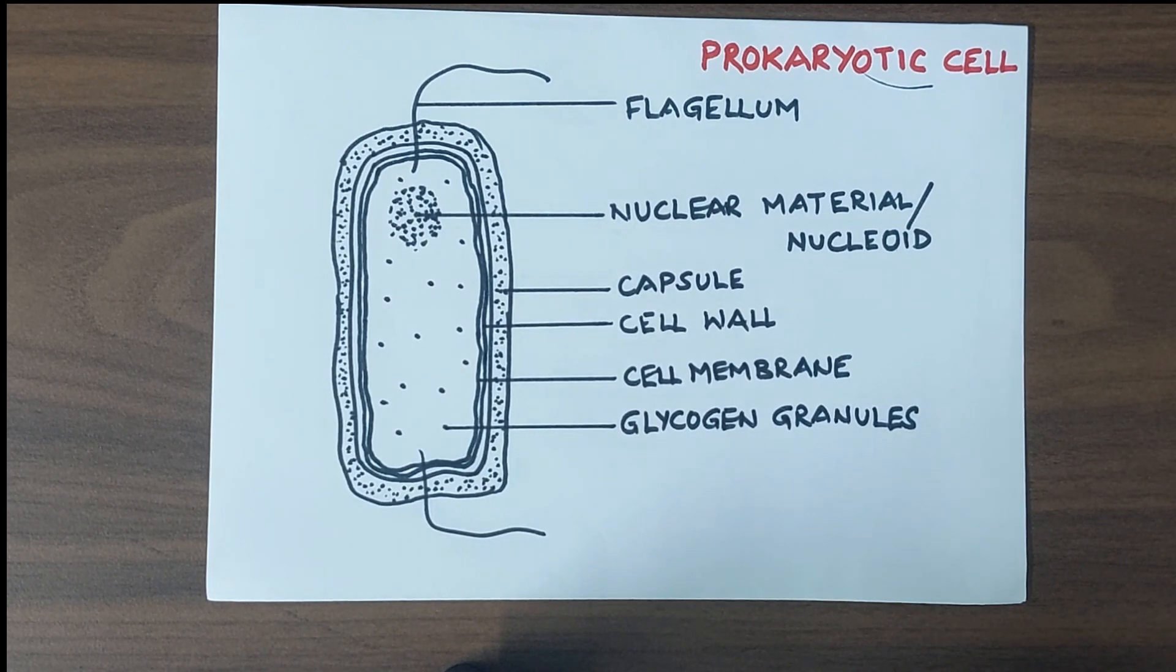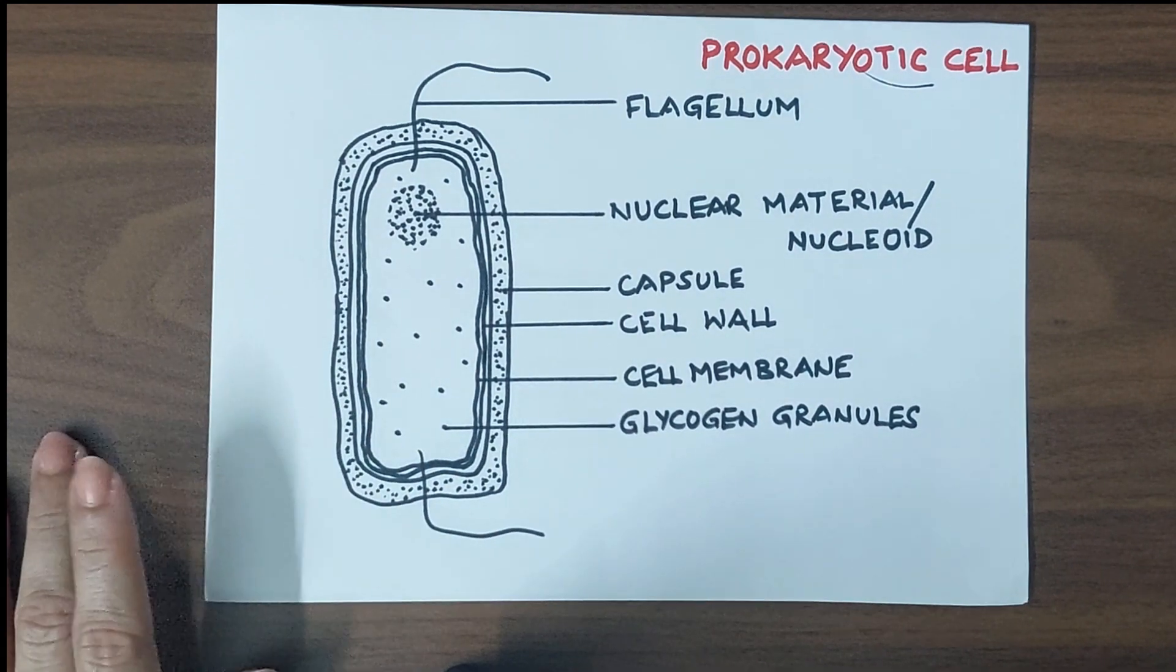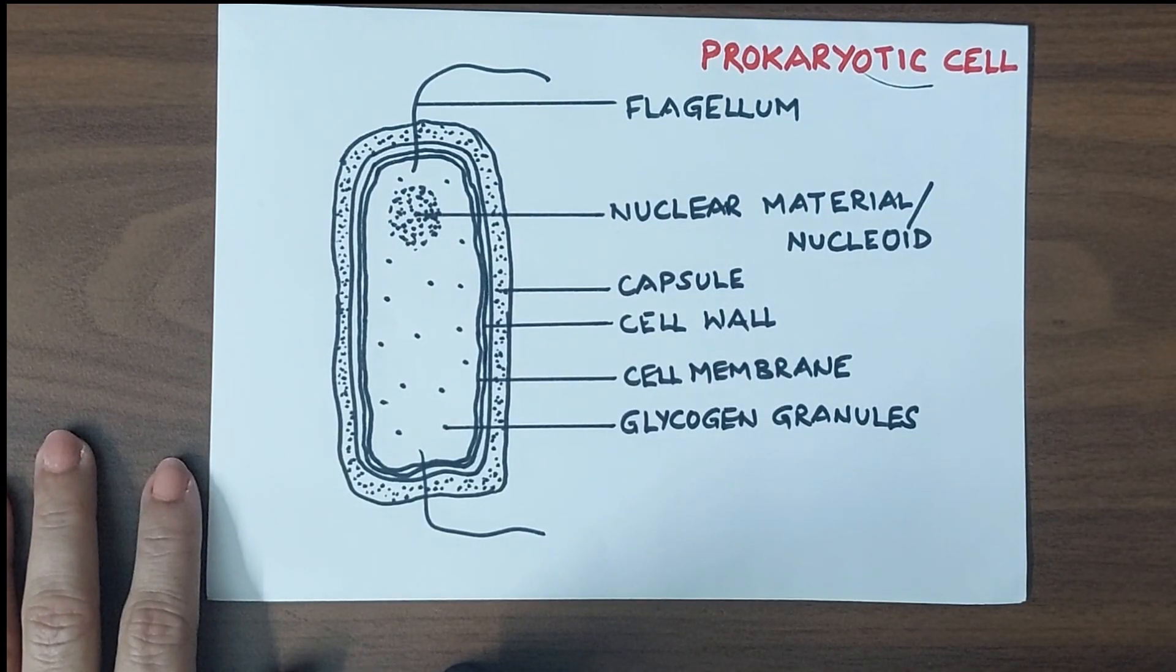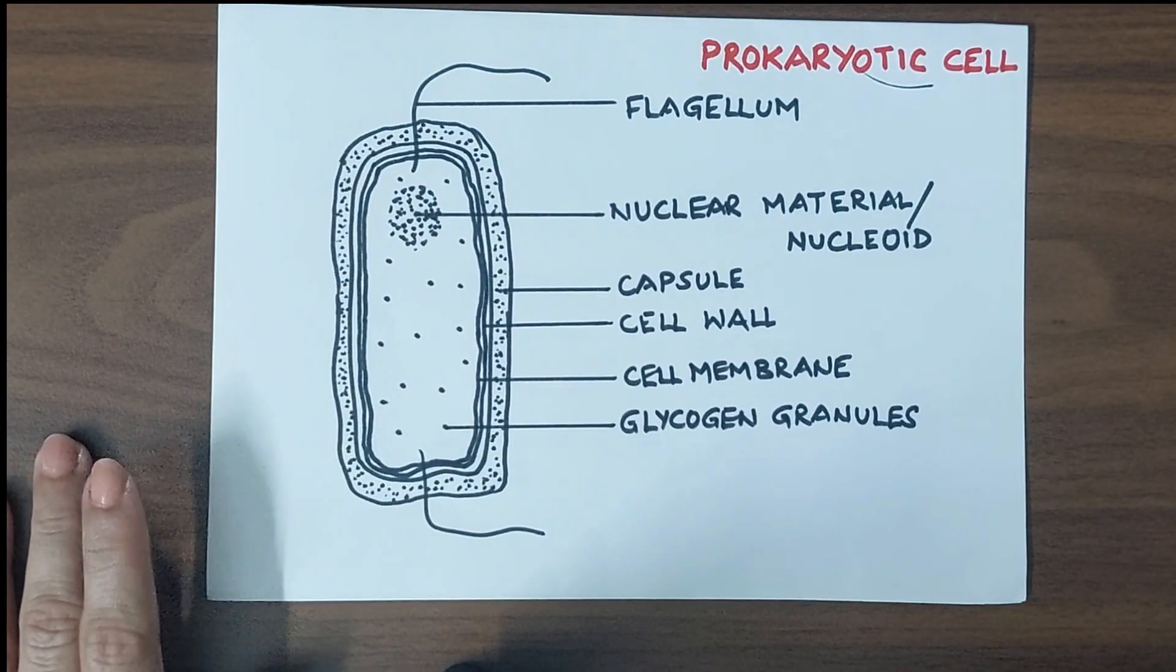If you have not seen the previous video, I would suggest that you go through it. It will be a very good idea to even recollect all the points. The link to the part one is given in the description for quick reference. Now, let us further move on to the different organelles within the eukaryotic cells.